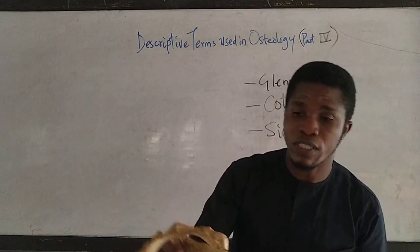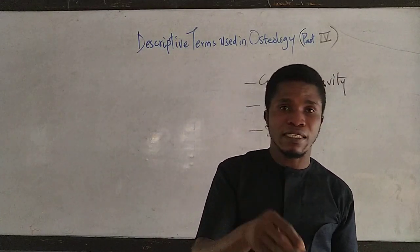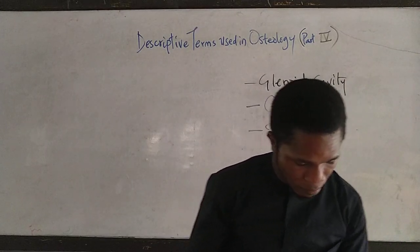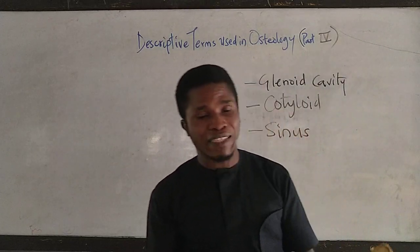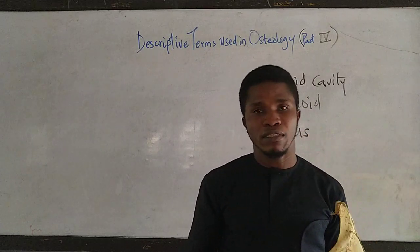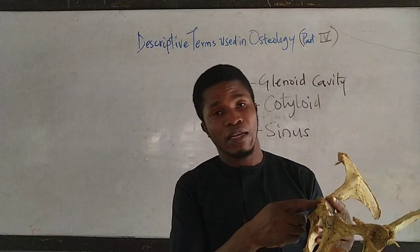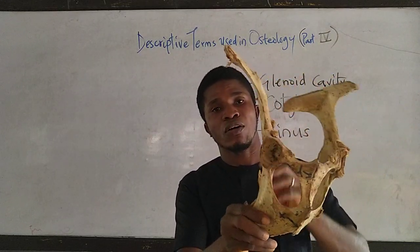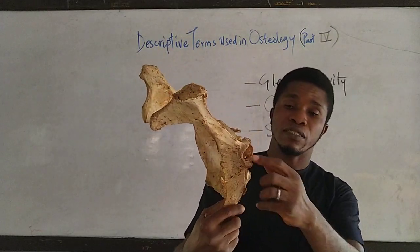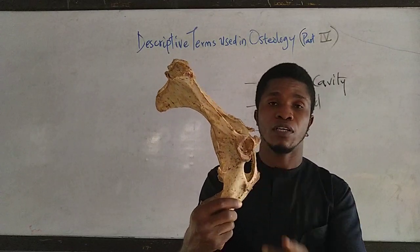A cotyloid is actually just like the glenoid cavity but it is deeper. The cotyloid is a more deeper articular depression. It is the same as the acetabulum. So on the os coxae — the hip bone or pelvic girdle — we have the acetabulum, which is an example of a cotyloid.